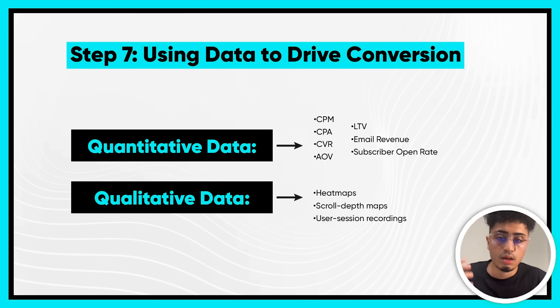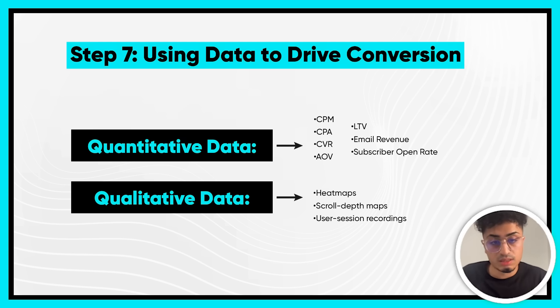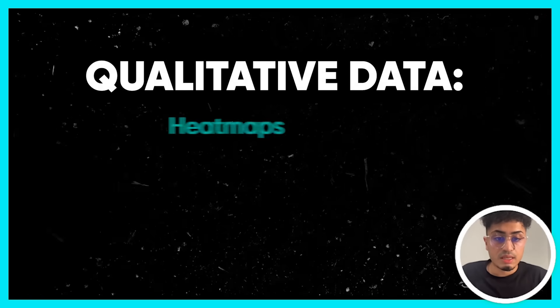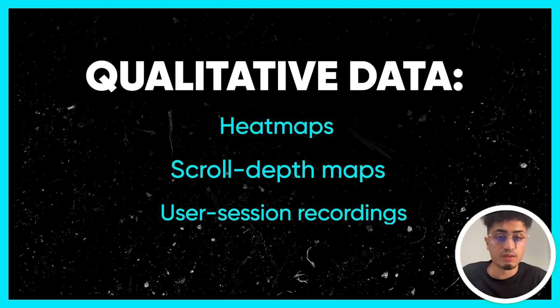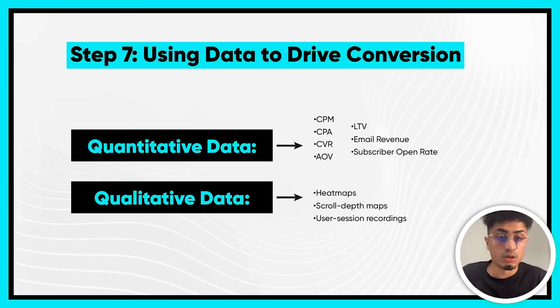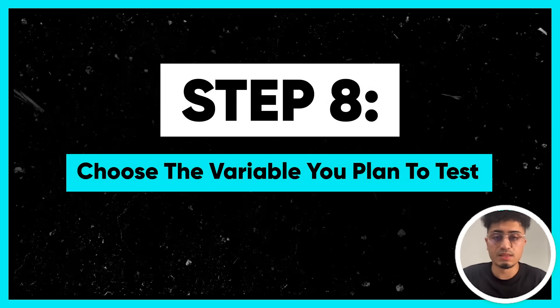Step seven: use data to drive conversions — no guessing, no hoping, no pleading. There are two types of data: quantitative and qualitative. Most people focus only on quantitative data, but it's often the qualitative data that tells you *why* your quantitative metrics are where they are. Utilizing heat maps, scroll maps, and user session recordings is a great way to optimize quantitative metrics like CPM, CPAs, CVRs, AOV, LTV, email revenue, subscriber open rates.